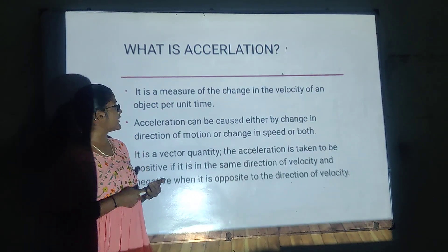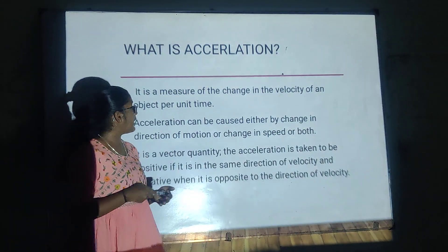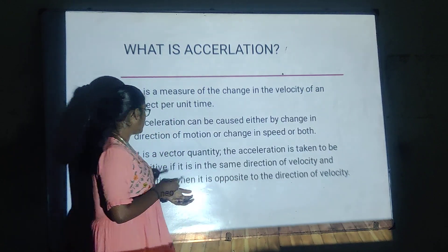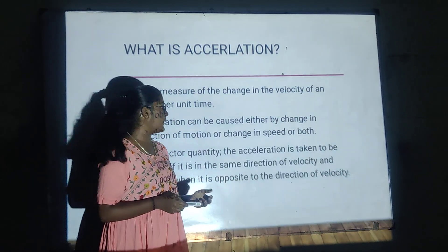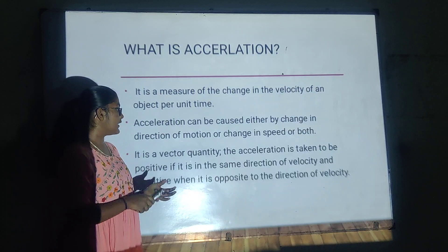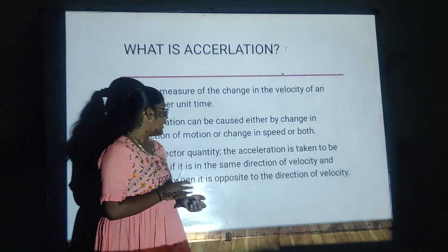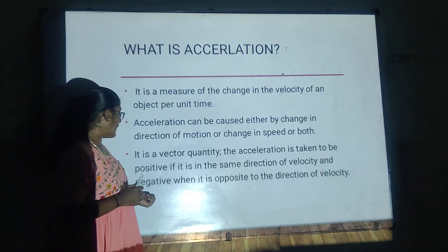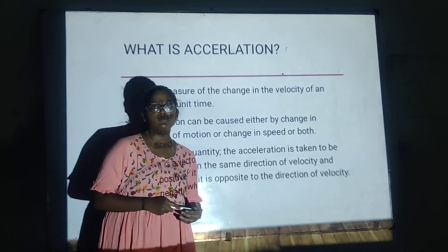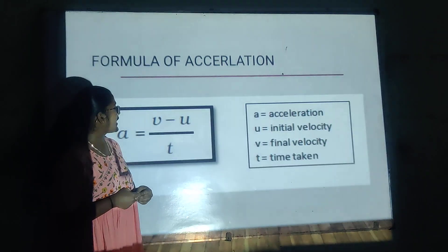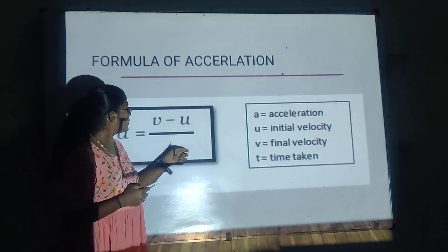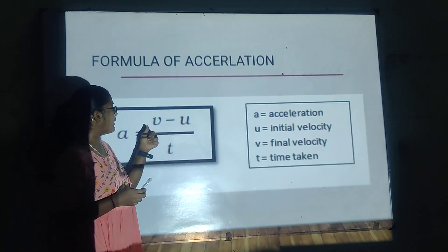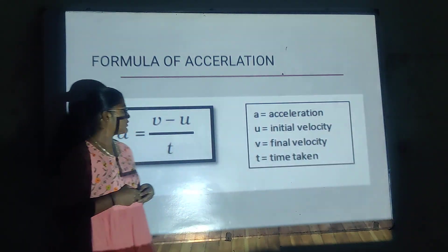Now let us see what is acceleration. It is a measure of the change in the velocity of an object per unit time. Acceleration can be caused by a change in direction of motion or a change in speed. It is a vector quantity — acceleration is positive if its direction is the same as velocity, and negative when opposite. The formula for acceleration is A = (V − U) / T, where A is acceleration, U is initial velocity, V is final velocity, and T is time taken.